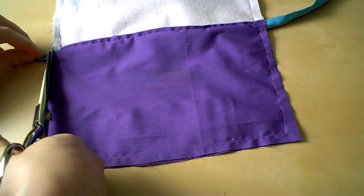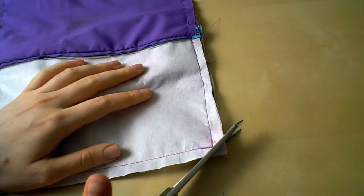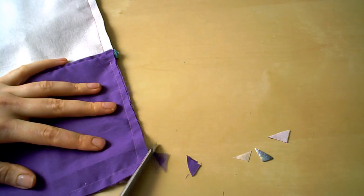Being careful not to ding up your good scissors, trim the excess zipper from both sides. Now you can trim your seam allowances if necessary and make sure you clip your corners.